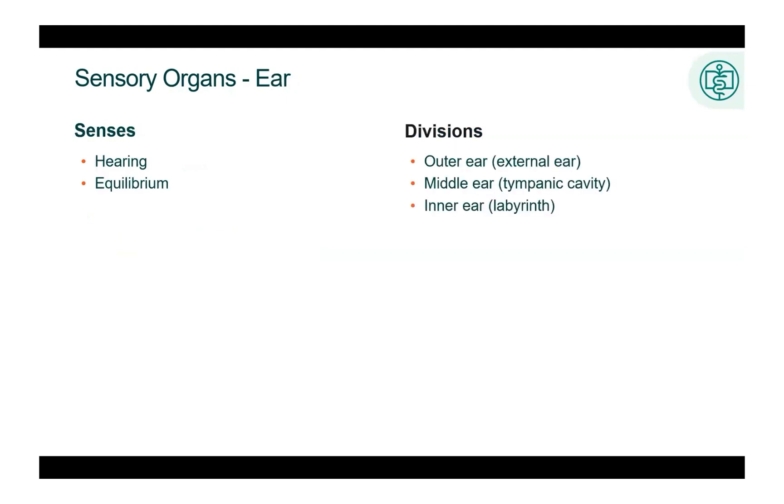The ear plays a part in both the sense of hearing and the sense of equilibrium. The ear works in tandem with the auditory nerves to send auditory impulses to the temporal lobes of the cerebrum. These structures working together form the auditory apparatus.